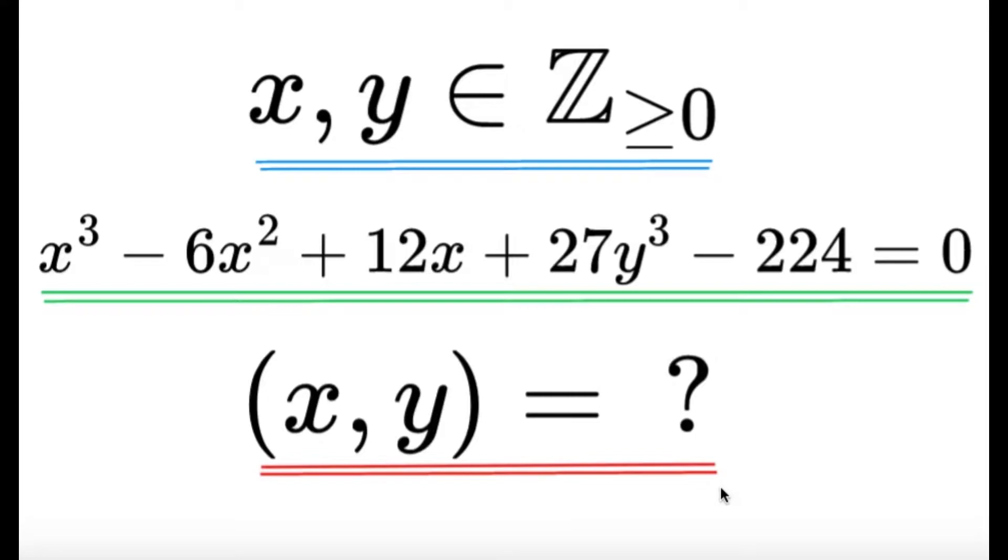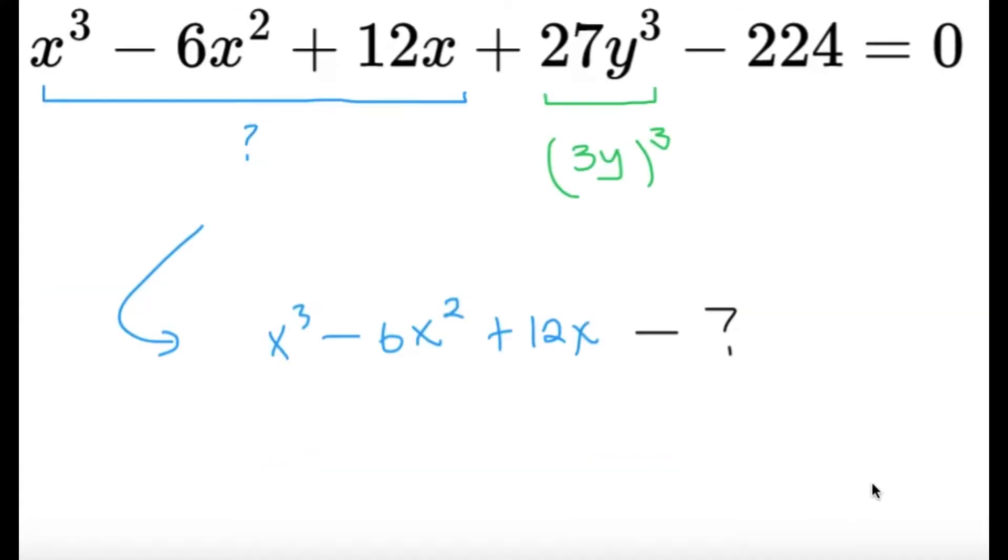Let's try to make some primary observations before we do anything else. What I immediately notice is that there are a lot of cubes. The 27y³ is a very obvious cube—that's just (3y)³. And here we have a bunch of x's, but the leading or largest degree is the x³ term, so I can sense something, maybe a sum of cubes scenario.